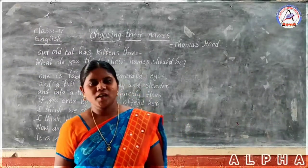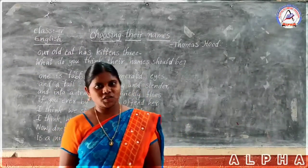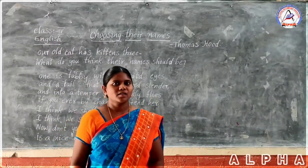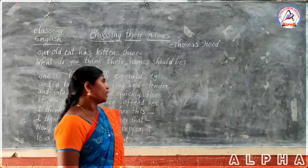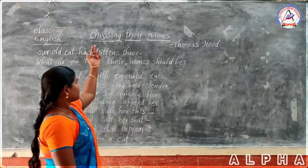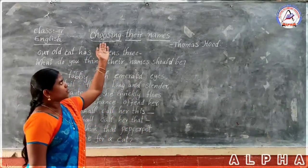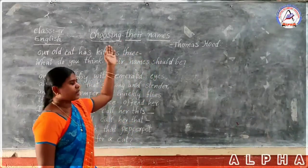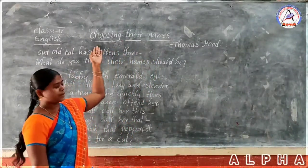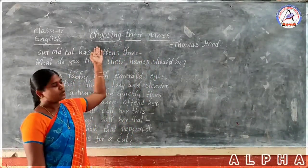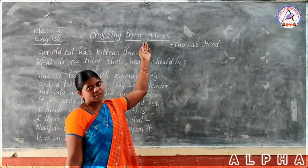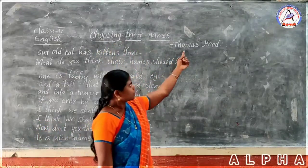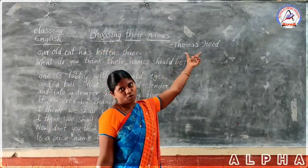Good morning, children. I am your English teacher. Today I am going to teach fourth class. This is a poem. The poem name is 'Choosing Their Names.' This poem's poet is named Thomas Hood.